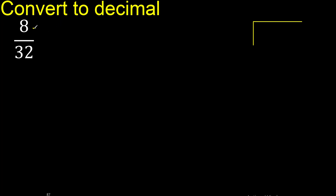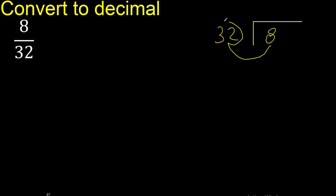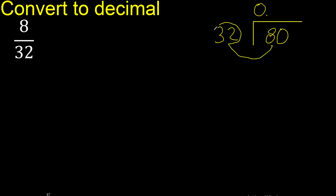8 divided by 32. 8 is less than 32, therefore complete with 0 here — 0 point. 80 is not less than 32.